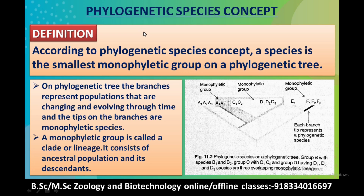Welcome to another video of Era of Zoology. In this video I am going to talk about the phylogenetic species concept. According to the phylogenetic species concept, a species is the smallest monophyletic group on a phylogenetic tree. This is the definition of the phylogenetic species concept.